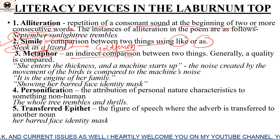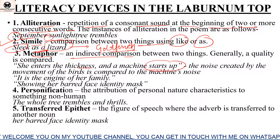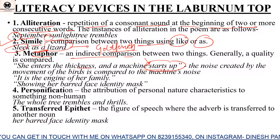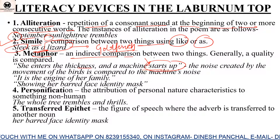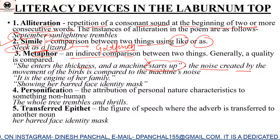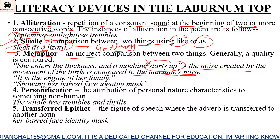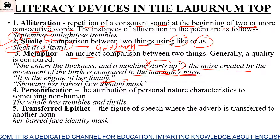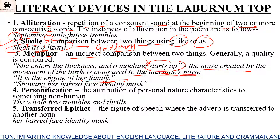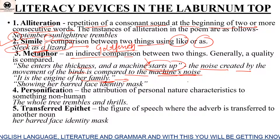In a metaphor, a quality is compared between two things without using 'like' or 'as'. 'She enters the thickness and the machine starts' — the machine here represents all the young birds' sounds. The birds are compared to a machine without using 'like' or 'as'. 'It is the engine of her family' — the goldfinch bird is compared to an engine of a machine, where the Lebanon tree, her young ones, everything together forms the machine.